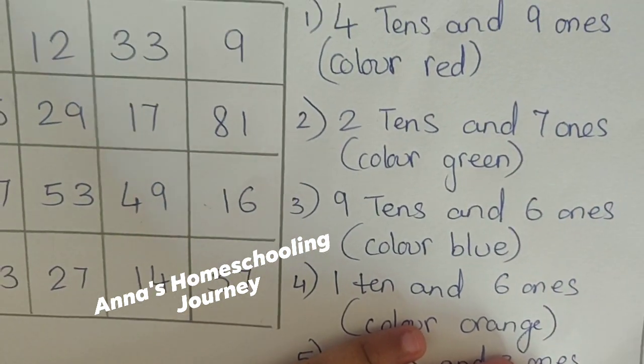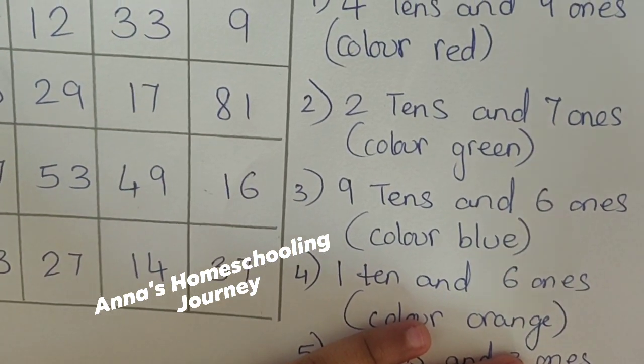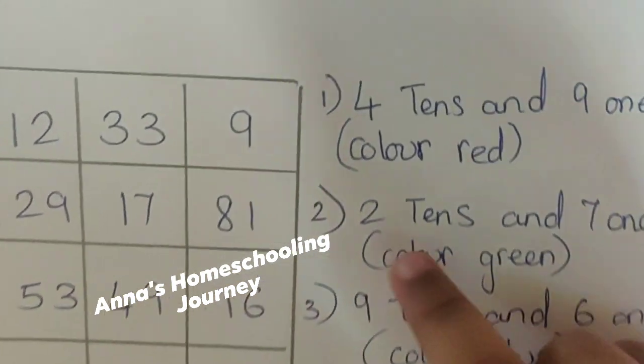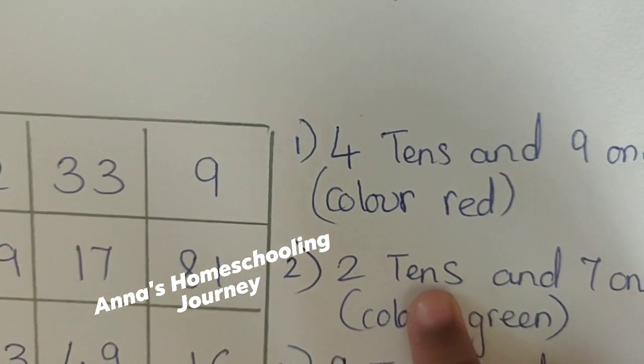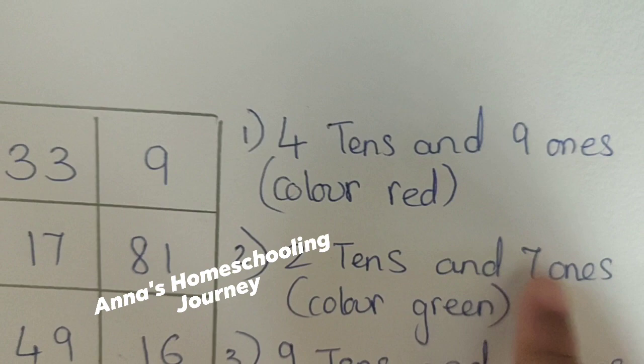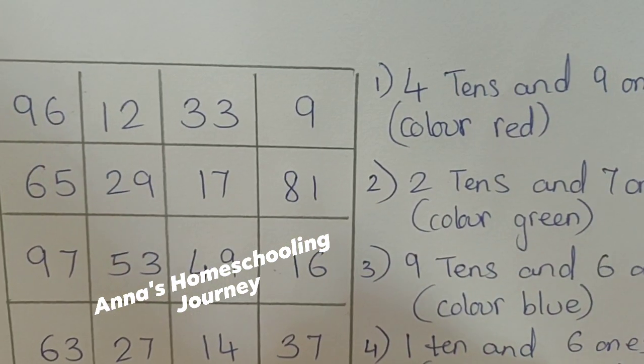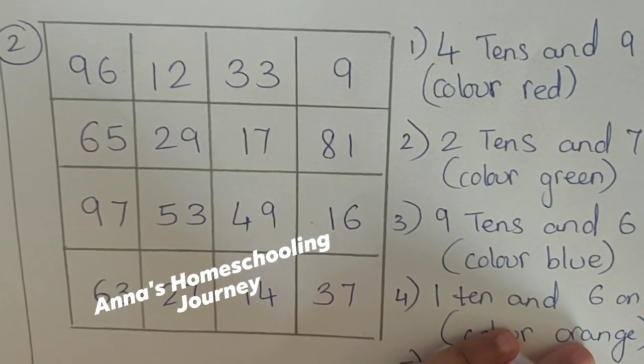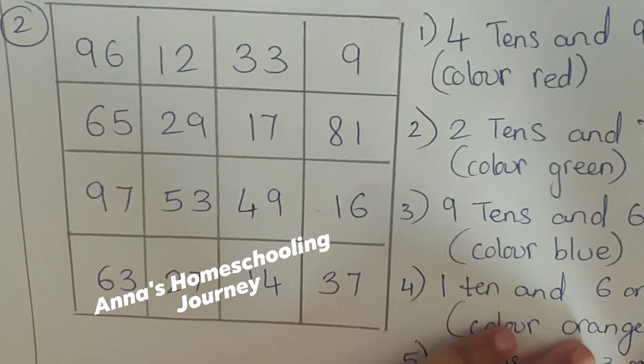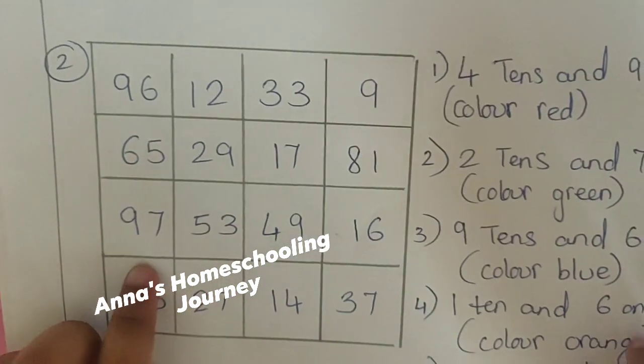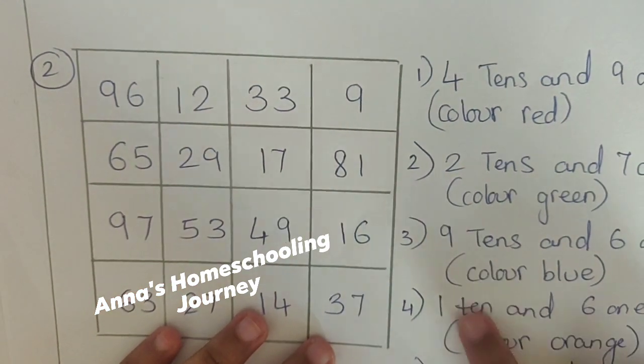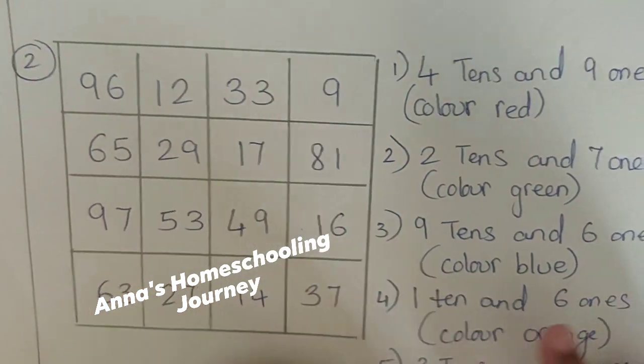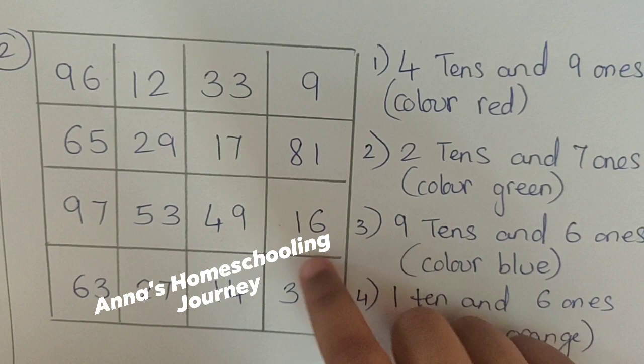What does the second one say? The second one says that 2 tens and 7 ones. Very good. The color is green. Yes. So, 2 tens and 7 ones. It will be 27.